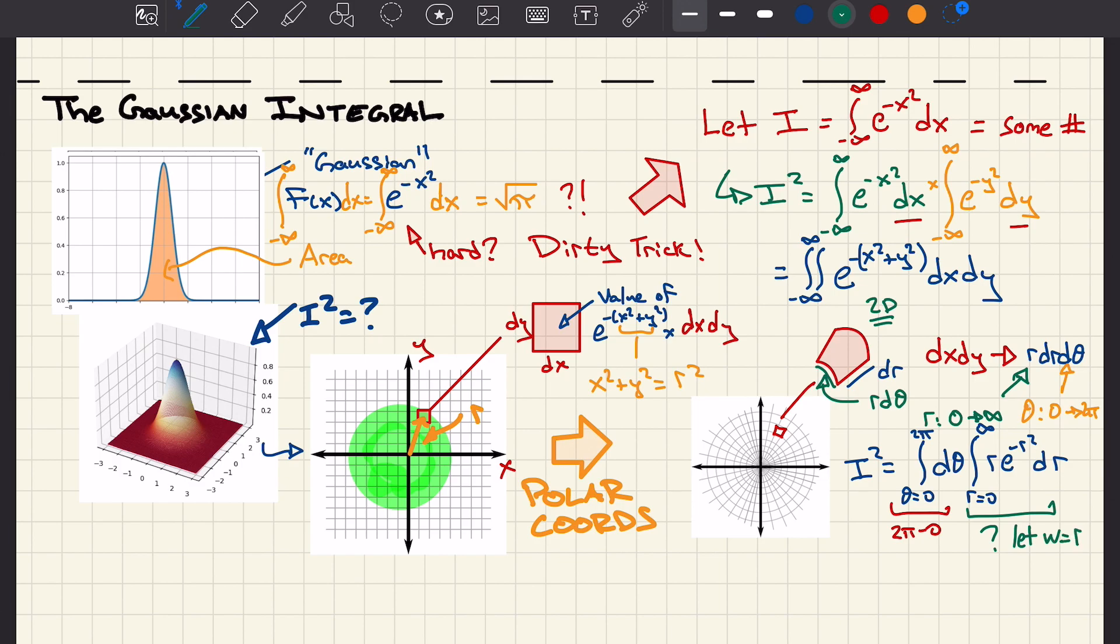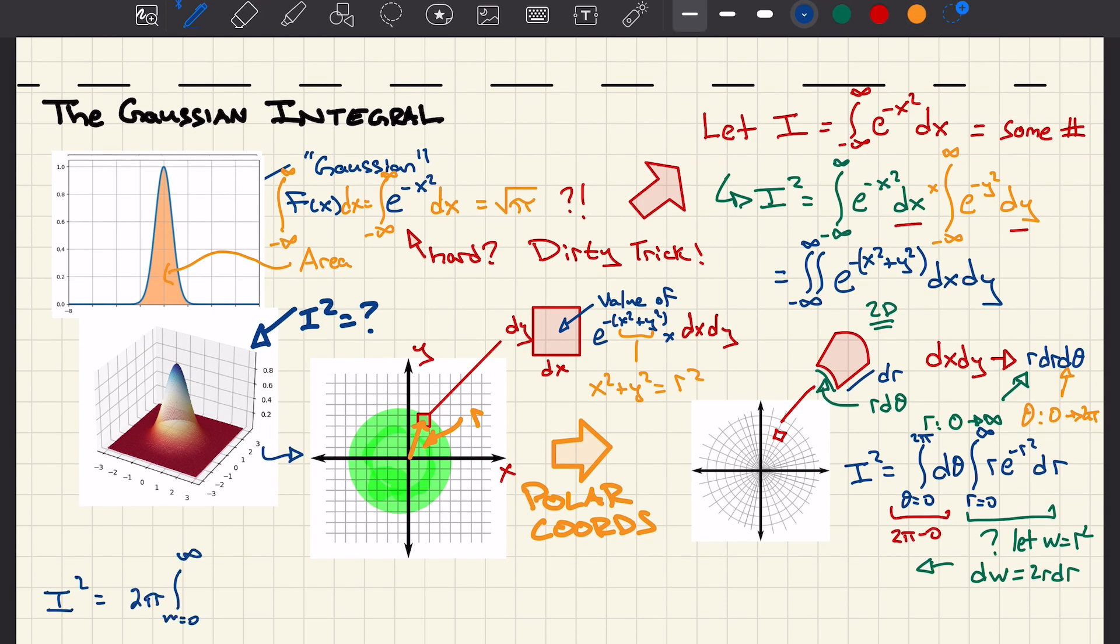We can let w equal r squared such that dw is 2r dr. We divide both sides by 2 so one half dw is r dr, and we can replace the r dr in there with a dw. Now our integral becomes 2 pi from our theta integration times one half dw times e to the minus w.